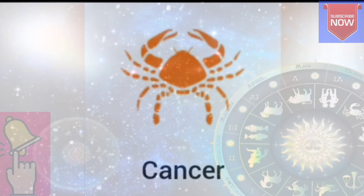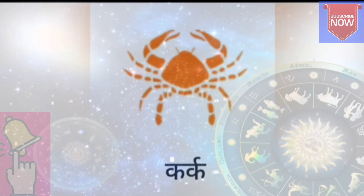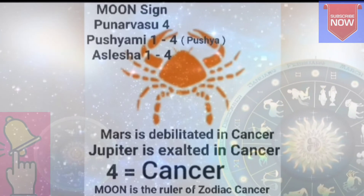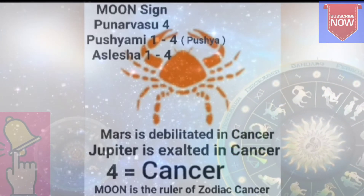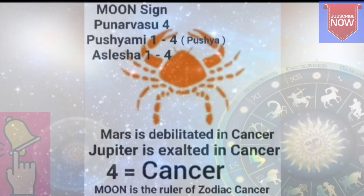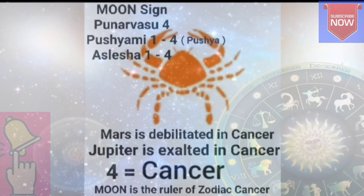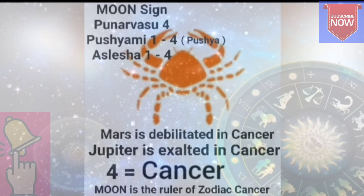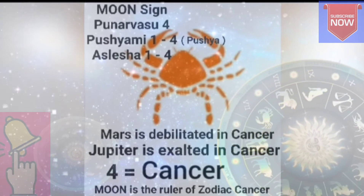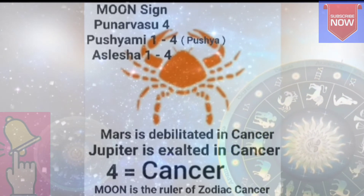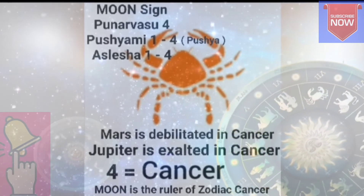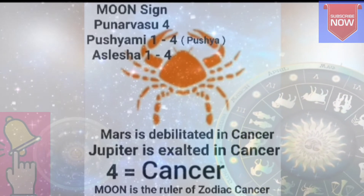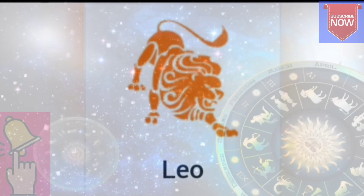Cancer, number 4, is called Kark in Hindi. This Rashi is ruled by Moon. Jupiter is exalted in Cancer and Mars is debilitated in Cancer. This Rashi contains the nakshatras of Punarvasu 4 Pada, Pushyami (Pushya) 1 to 4 Pada, and Ashlesha 1 to 4 Pada.